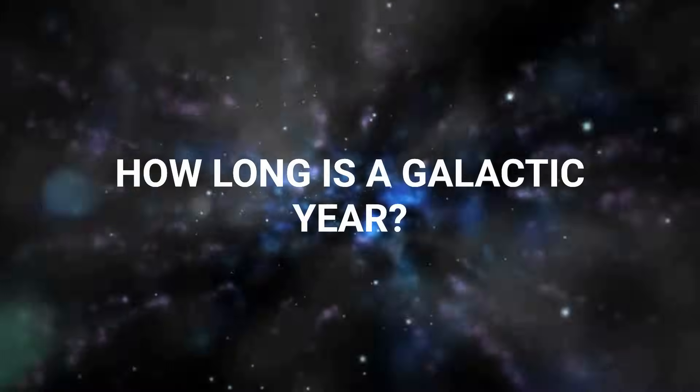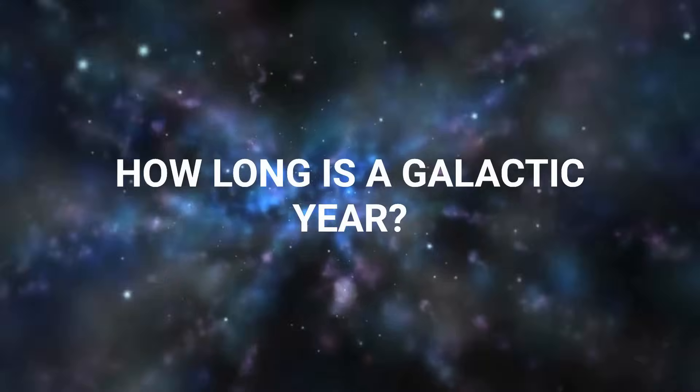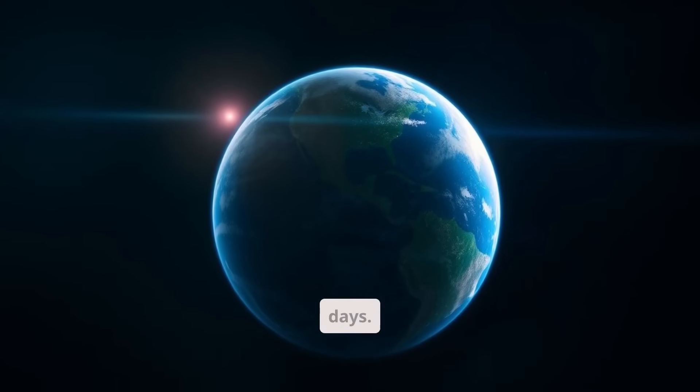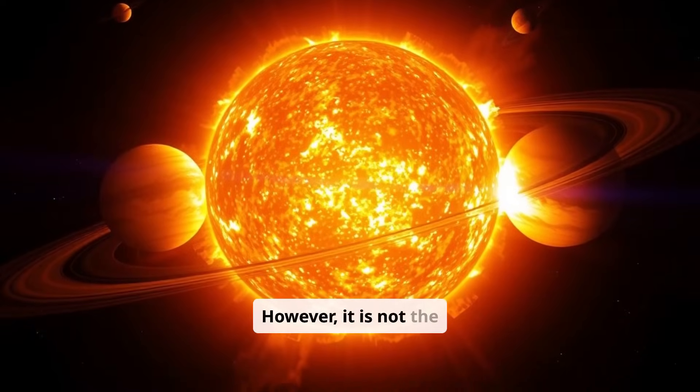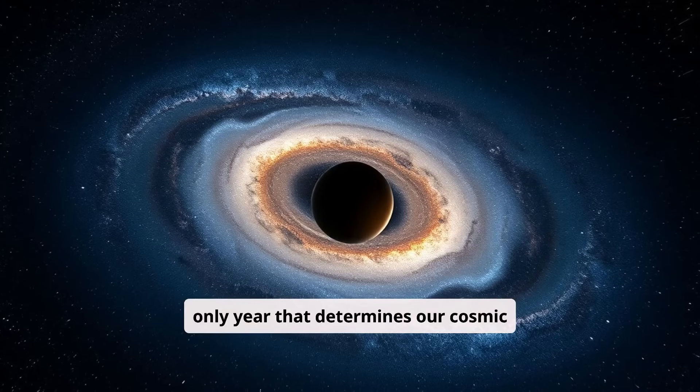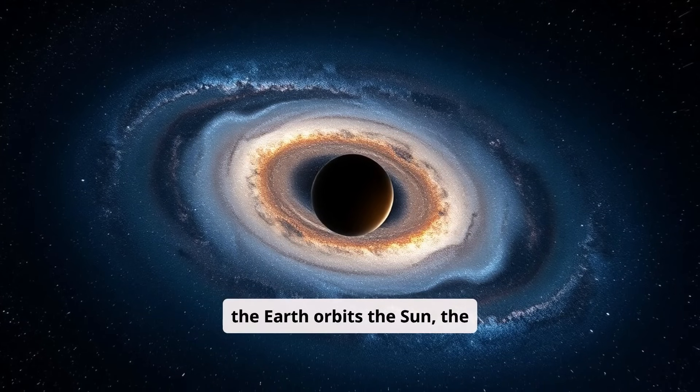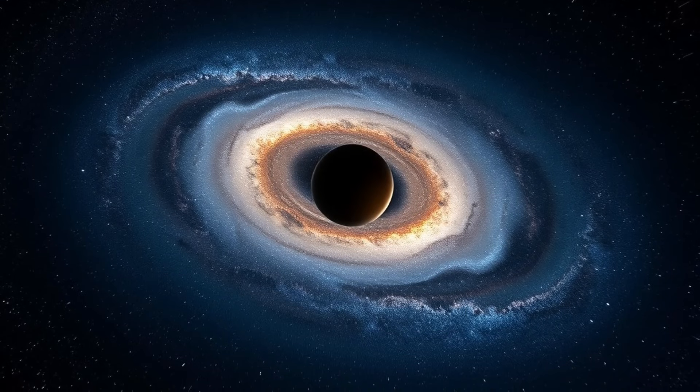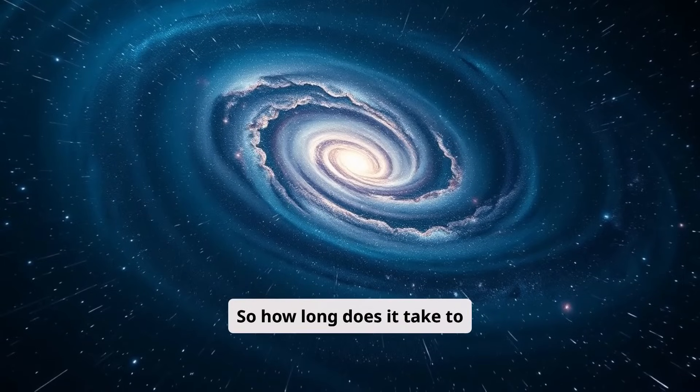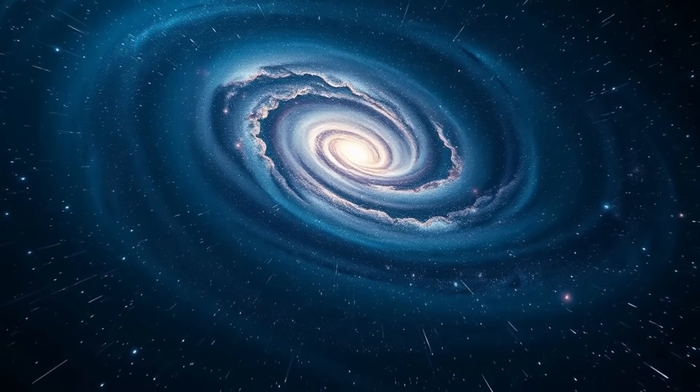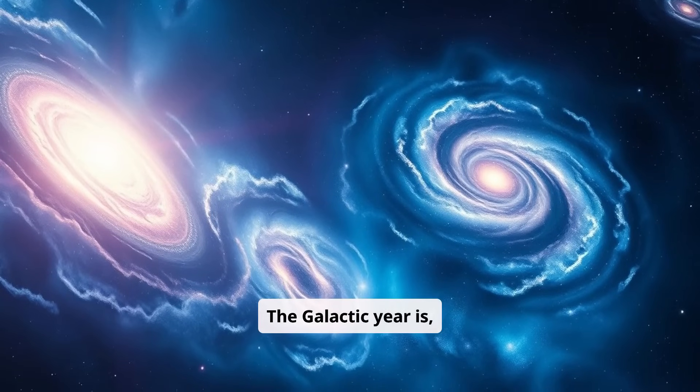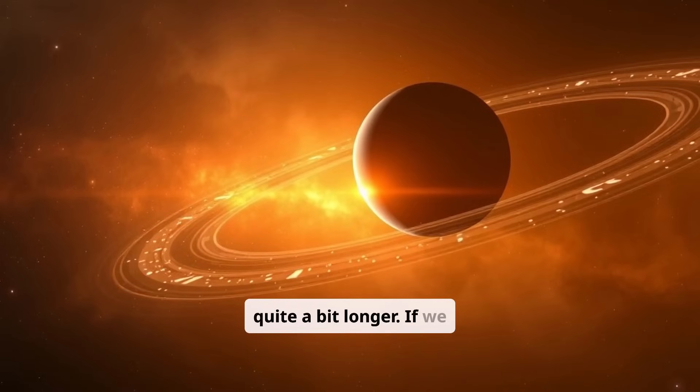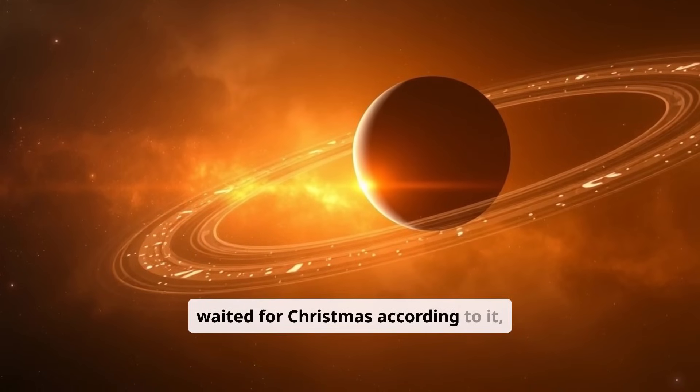How long is a galactic year? Our Earth year lasts about 365 days. However, it is not the only year that determines our cosmic time. Just as the Earth orbits the Sun, the entire solar system orbits the center of our galaxy. So how long does it take to complete one lap? The galactic year is, compared to the Earth year, quite a bit longer. If we waited for Christmas according to it, we would get to celebrate it only once every 240 million years on average.